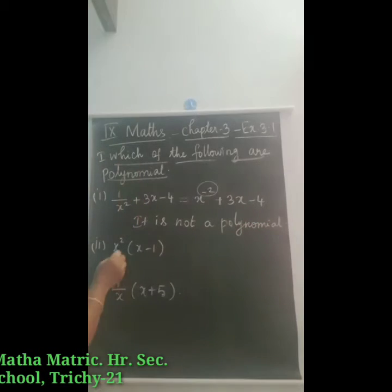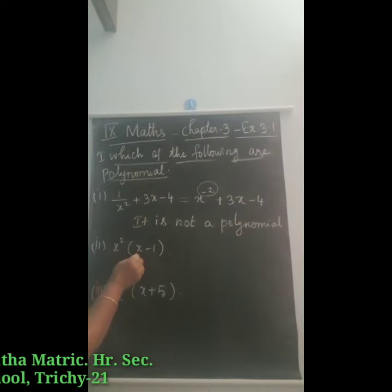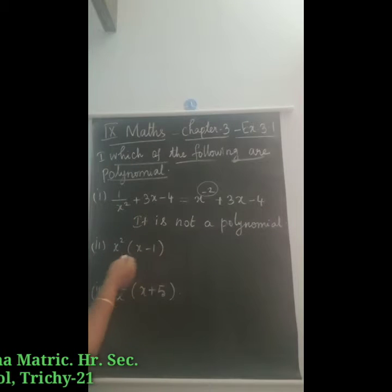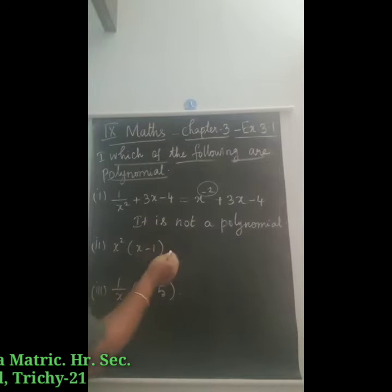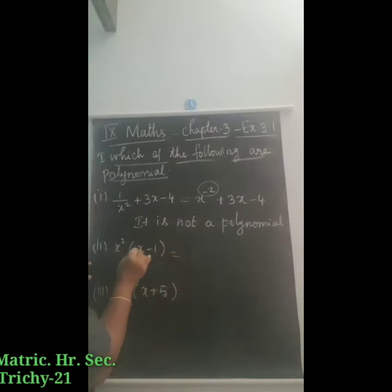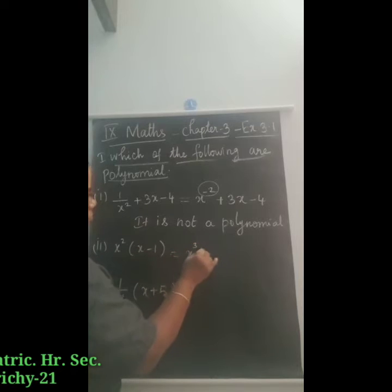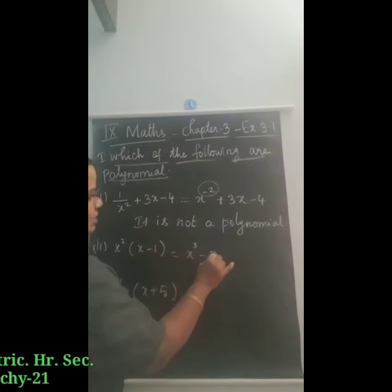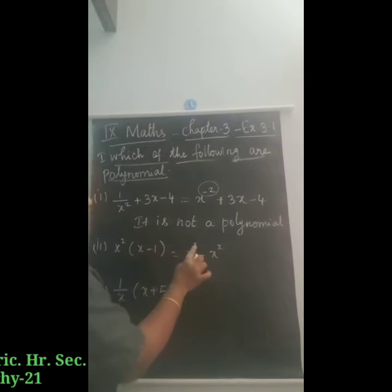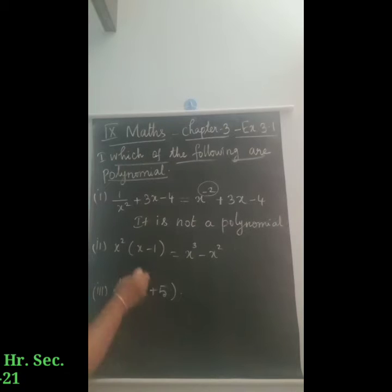Next one: x squared into x minus 1. We multiply this to get x squared into x, which gives x cubed minus x squared. This is positive integral power, so it is a polynomial.